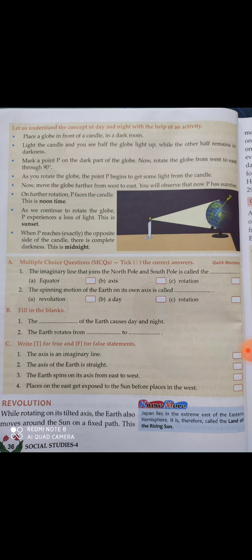Now let's learn about revolution. The earth revolves in two ways — first, it rotates on its own axis, which we had learned about earlier. Plus, along with that, it also revolves around the sun. First it rotates on its own axis, which causes day and night, and secondly it revolves around the sun.